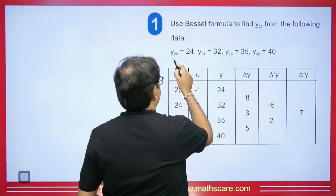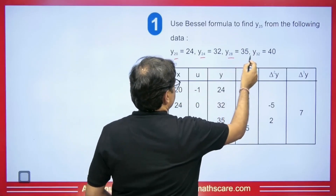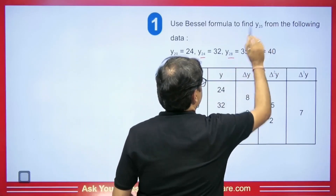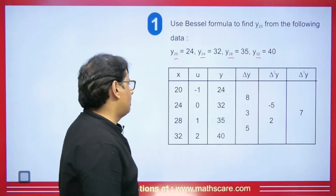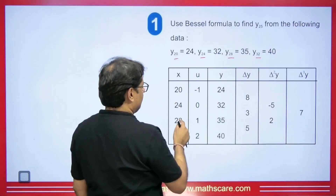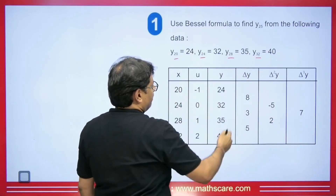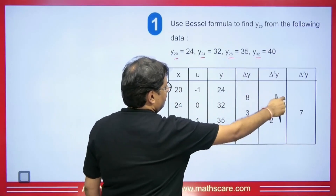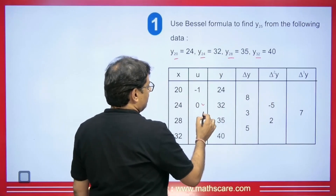We have values at 20, 24, 28, 32, and it is asked what will be the value at 25. We write these X values — 20, 24, 28, 32 — with their corresponding Y values in a difference table.